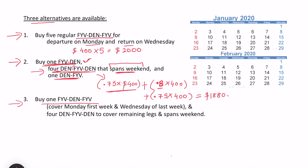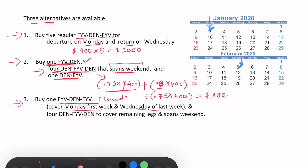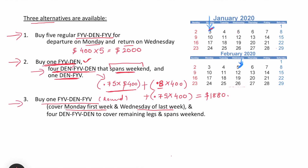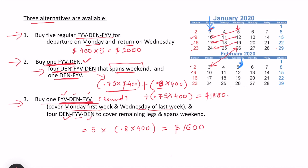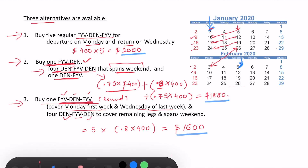In the third alternative, I buy one Fetival-Denival-Fetival round trip and additional round trips spanning weekends. I select the first Monday and the last Wednesday of the five-week period for the outer journey. The inner trips are Denival-to-Denival round trips covering Fetival, and there are five round trips total. Each spans a weekend giving a 20% discount, costing 80% × $400 each. This totals $1,600. Comparing all three — $2,000, $1,880, and $1,600 — the third alternative is clearly optimal.